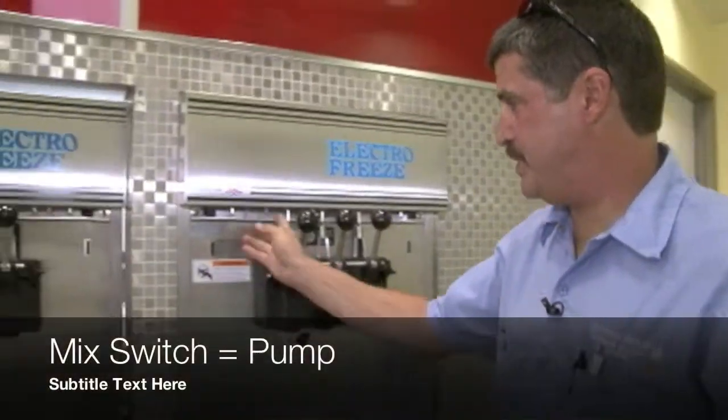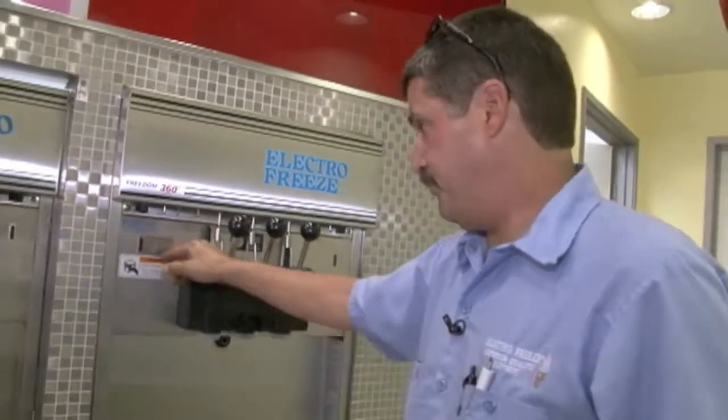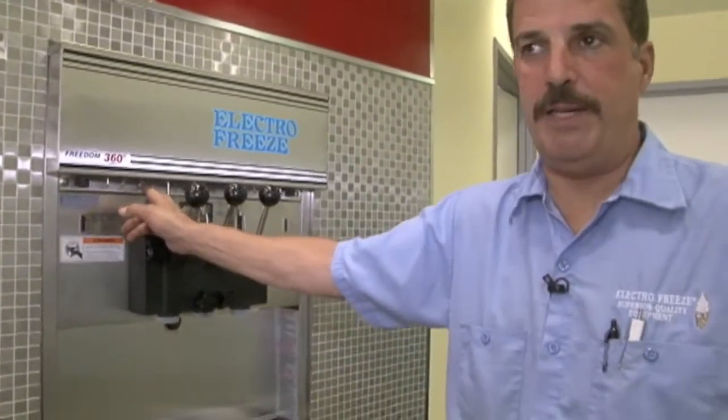The next switch is your mix on and off. That's your pump. Why they don't call it pump, I don't know, but it says mix on. If you turn that on, your pump's going to come on, and you will have the pump on any time you're dispensing product or cleaning and flushing the machine.